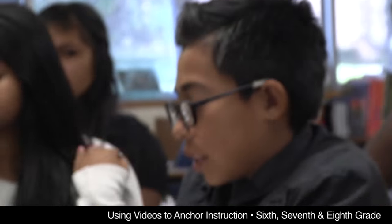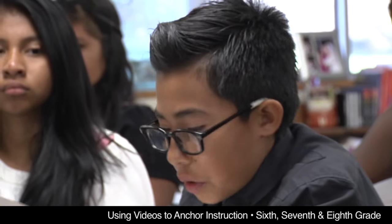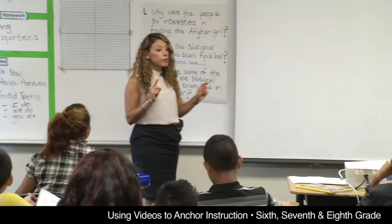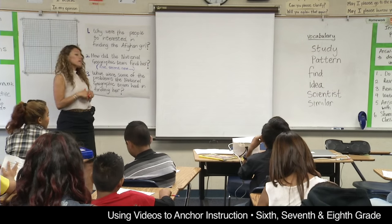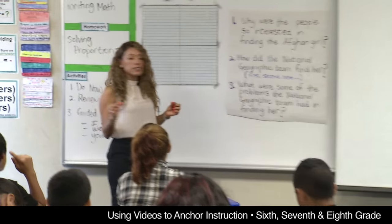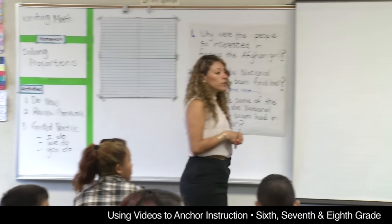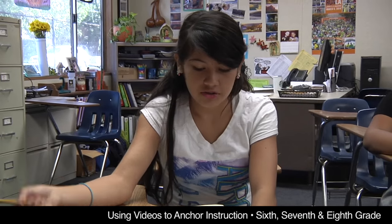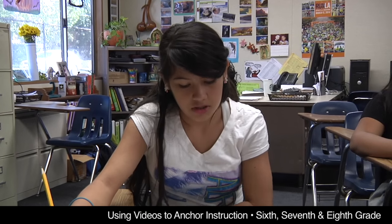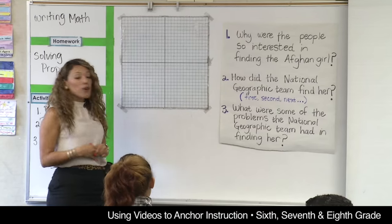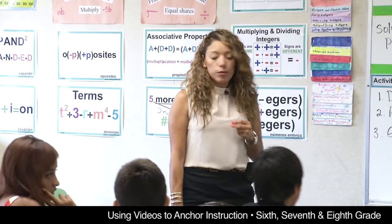Sergio, why don't you share your answer, please? She was different from others, and that's how they were interested in finding her. Let's not forget to use some of the vocabulary words we learned last week and use a complete sentence — you have complete sentences written in your papers. Angie, what answer do you have? The people were interested in finding the Afghan girl because they were worried about her, because she was different from other girls, and her eyes were different. Very good! Let's move on to our second question — Partner A, go ahead and begin sharing with Partner B.